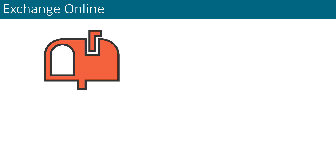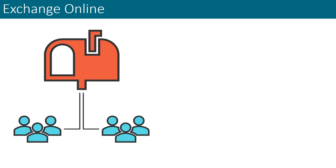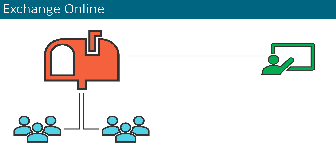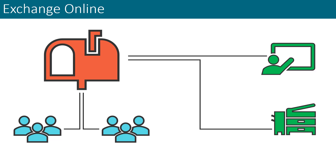Shared mailboxes allow groups of users to share information via a central mailbox, while resource mailboxes can be set up for meeting rooms and equipment. These resource mailboxes can be used to reserve those rooms and resources.